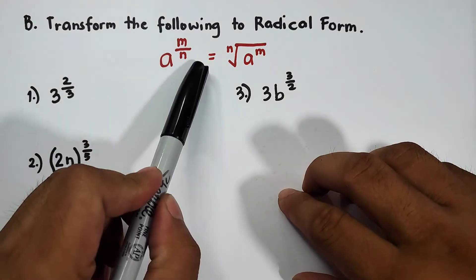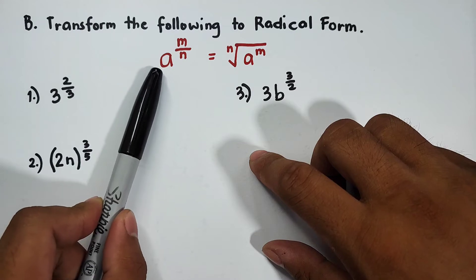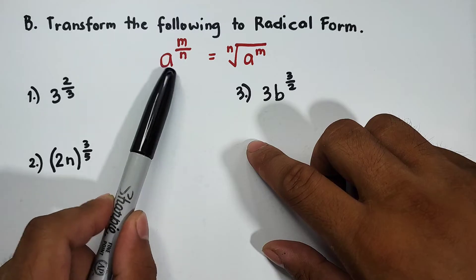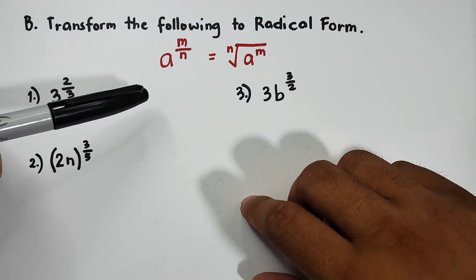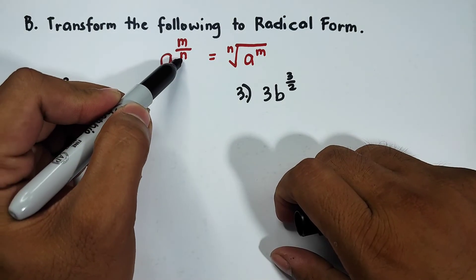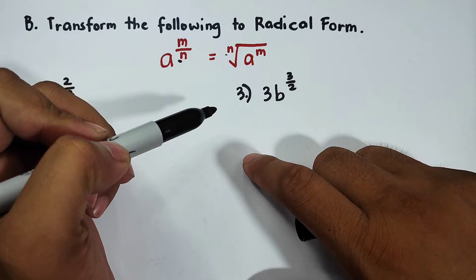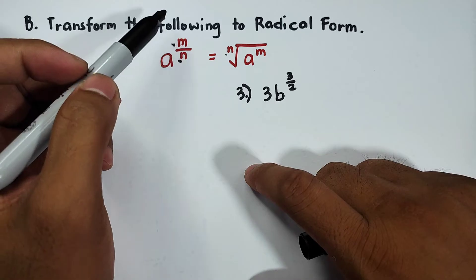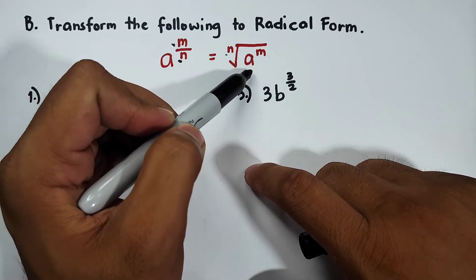What we have here is: transform the following to its radical form. This is the general form for an expression with a rational exponent — the base here is a and the exponent is m over n. To transform this into radical form, the denominator of the exponent will become the index of the radical, and the numerator will become the exponent of the radicand.